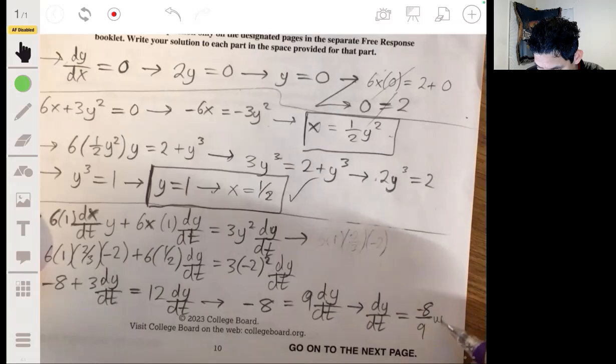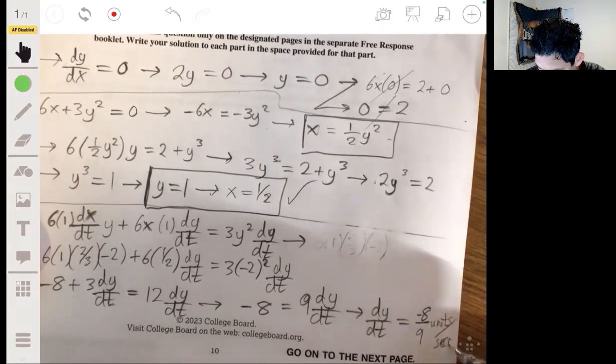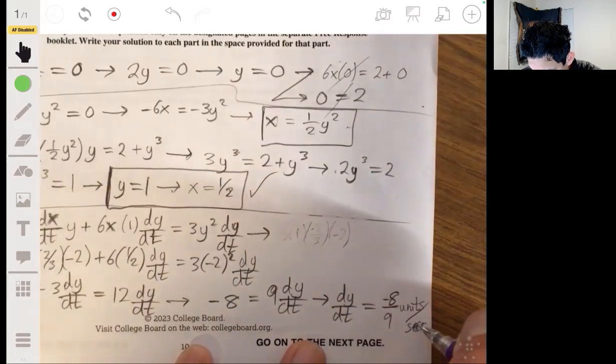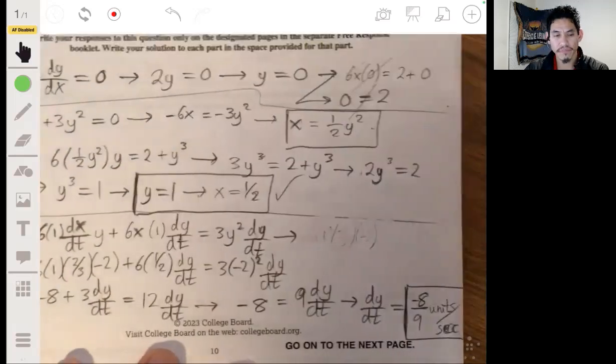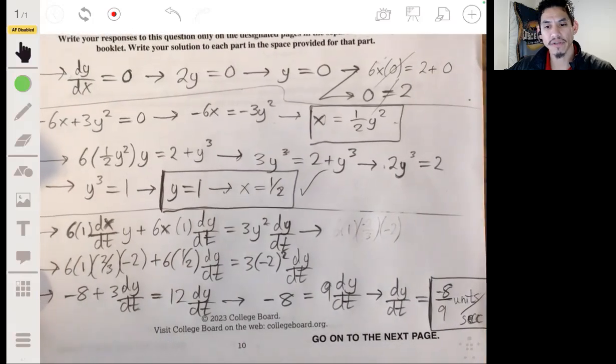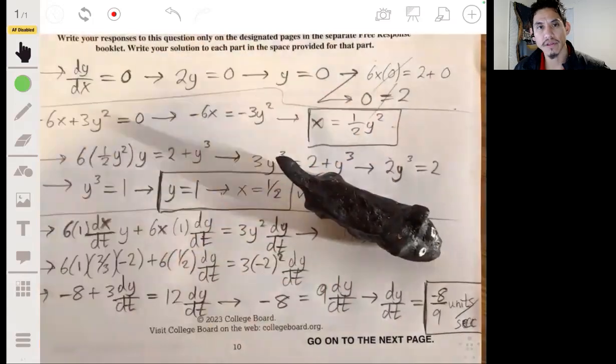It should be units per second. Perfect. Just enough space. Wow, look at that. There we go. So there's your solution. All right, so I hope that helps. Let me know if you have any questions and feel free to leave a comment, and I'll try my best to get back to you. Good luck.